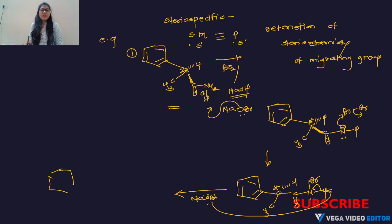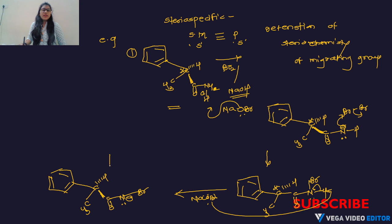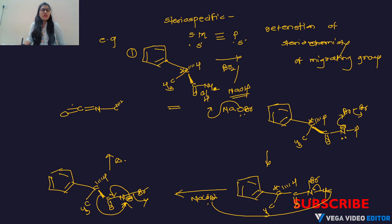Again NaOBr as base takes the proton, and the charge on nitrogen becomes negative. We get CH₃–C(H)(below H, above CO)–N⁻–Br. Under heating condition, the group migrates to the nitrogen with retention of stereochemistry, Br departs, and the negative charge on nitrogen donates electrons to the C–N bond.